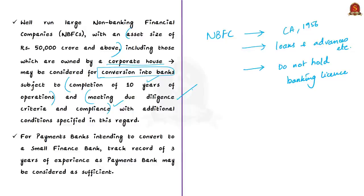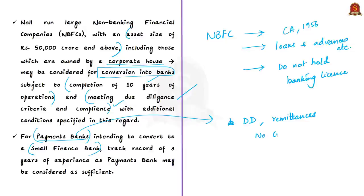There is another recommendation for payments banks intending to convert to small finance banks. A payments bank has specific licensing conditions that restrict its activities mainly to acceptance of demand deposits and provision of payments and remittance services. It is like any other bank but operates on a smaller scale without credit risk — it cannot advance loans or issue credit cards, but can accept demand deposits up to one lakh rupees, offer remittance services, mobile payment services, transfers, and other services like ATM cards, debit cards, and net banking.